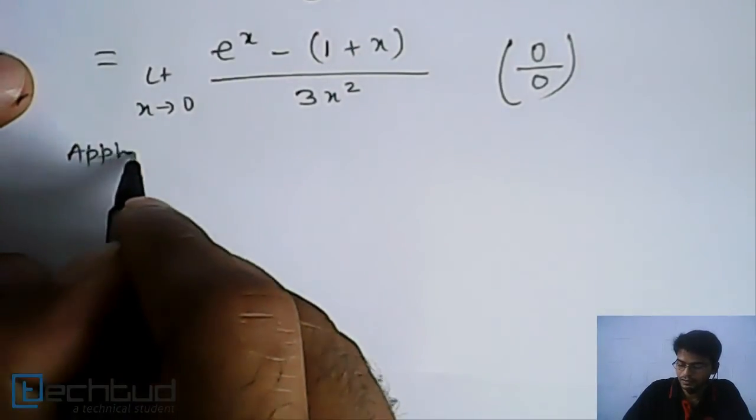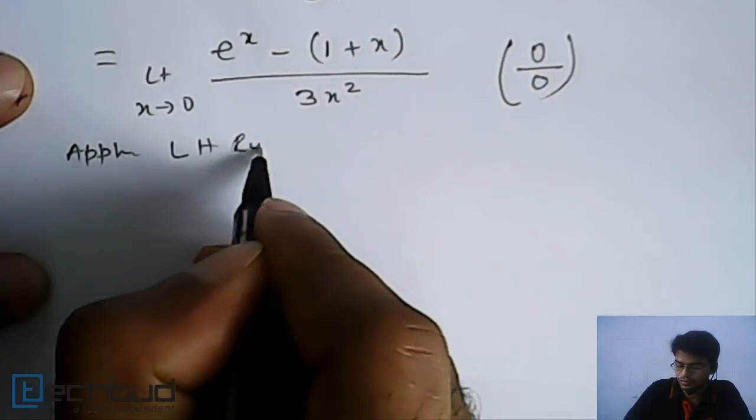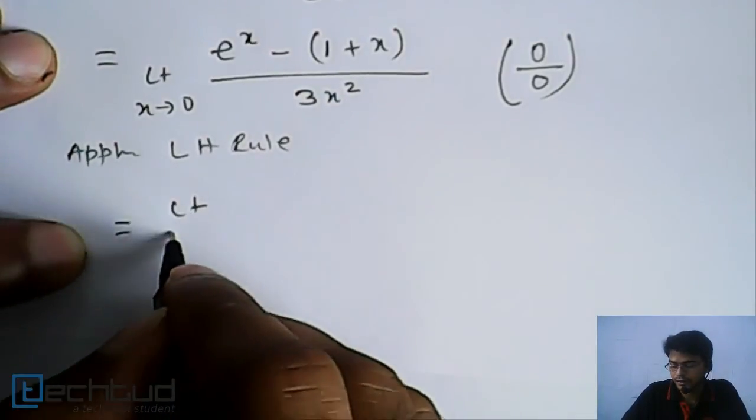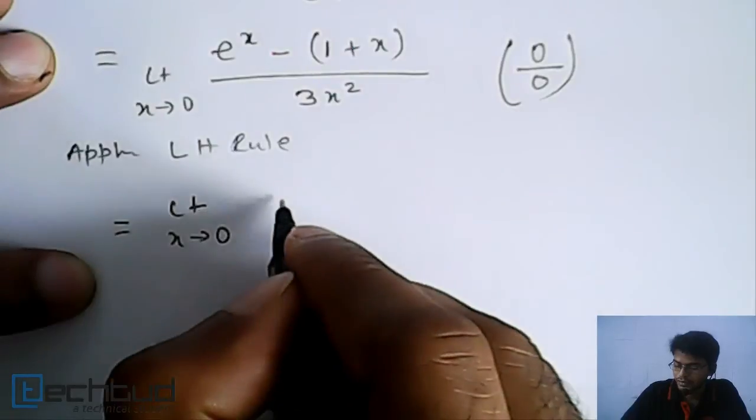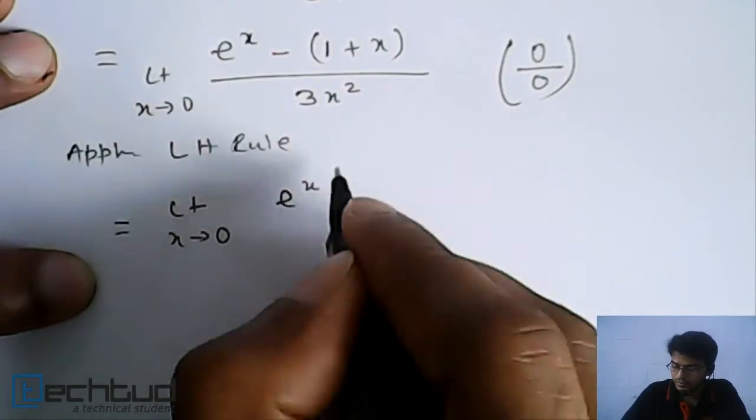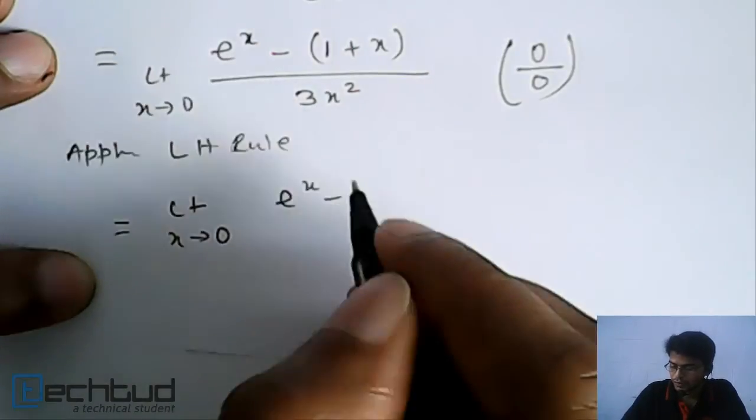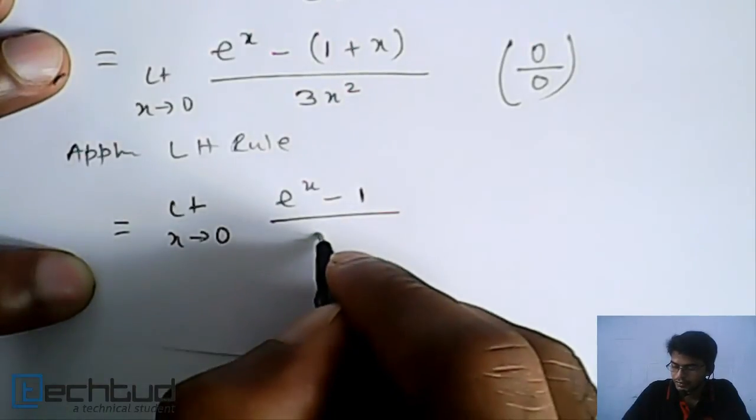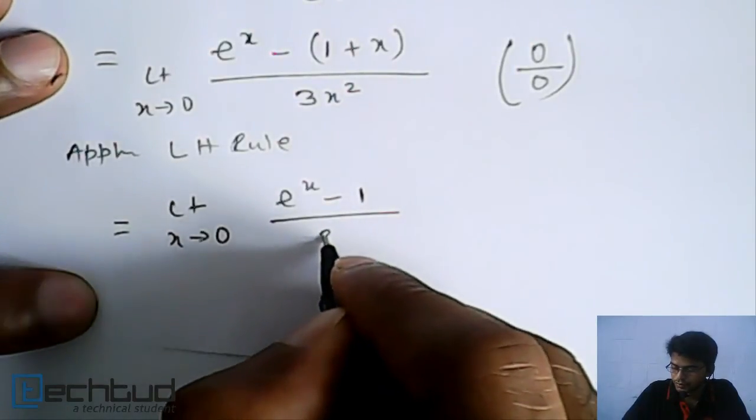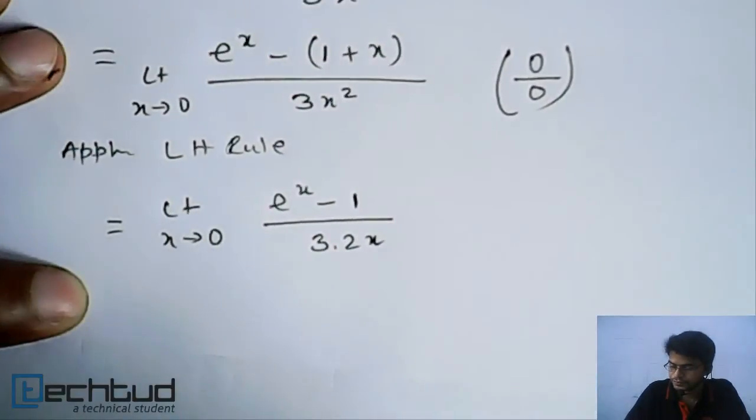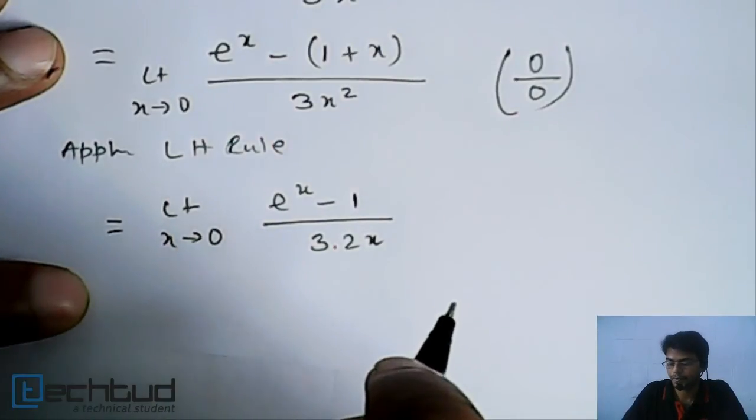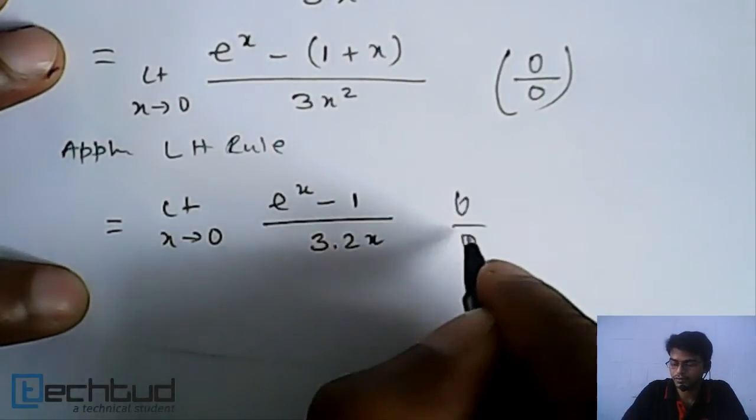Again applying L'Hospital's rule. So it will be equal to limit x tends to 0, e to the power x, differentiation of 1 is equal to 0 and x is equal to 1, upon this is equal to 3 into 2x. So here, if you see, this is again indeterminate form. This is again 0 by 0.